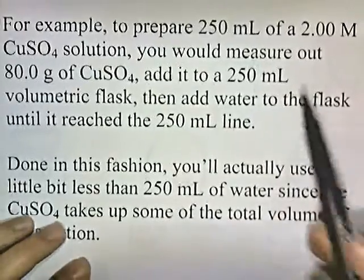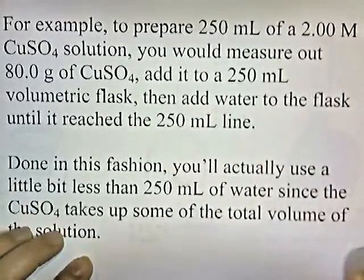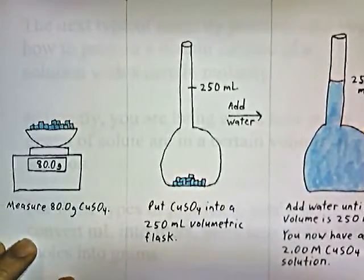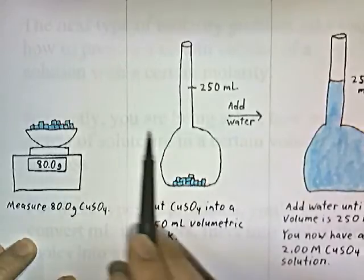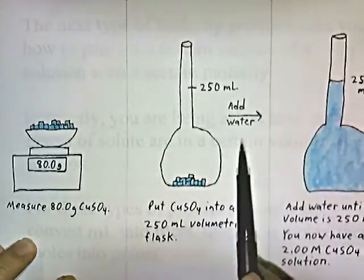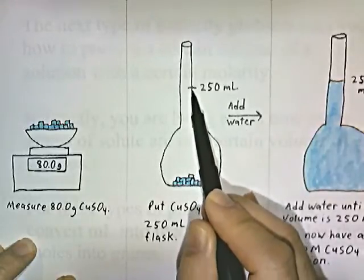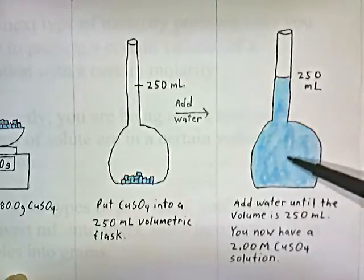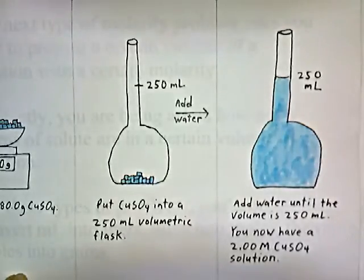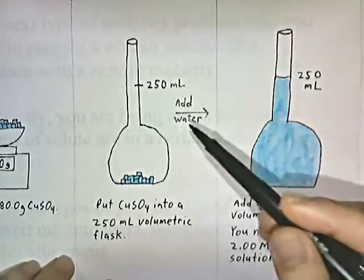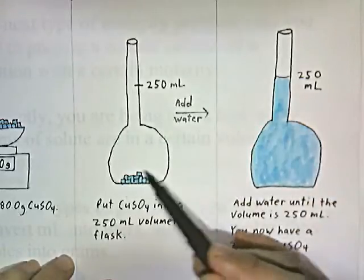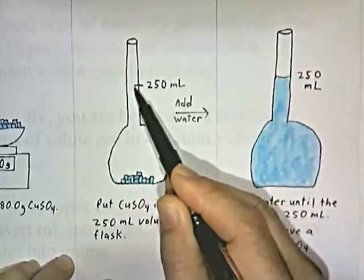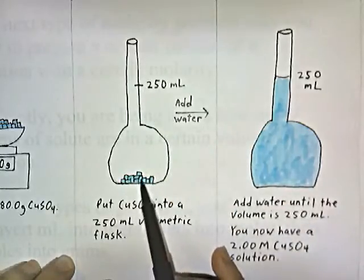Here's a picture of that procedure. To prepare 250 milliliters of solution at that concentration, you measure out 80 grams of copper sulfate, add the copper sulfate to an empty volumetric flask, then add water until it reaches the 250 milliliter line. That gives you 250 milliliters of copper sulfate solution at 2 molar. The total volume is 250 milliliters, but some of that volume is taken up by the copper sulfate, so the amount of water added will be slightly less than 250 milliliters.